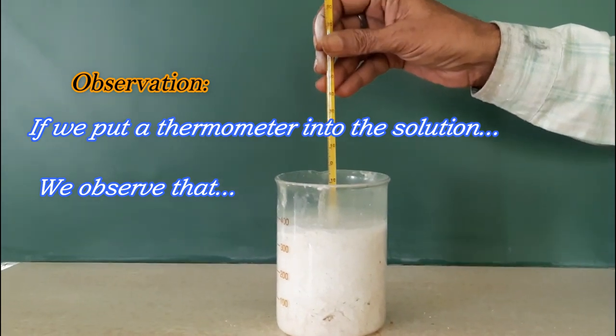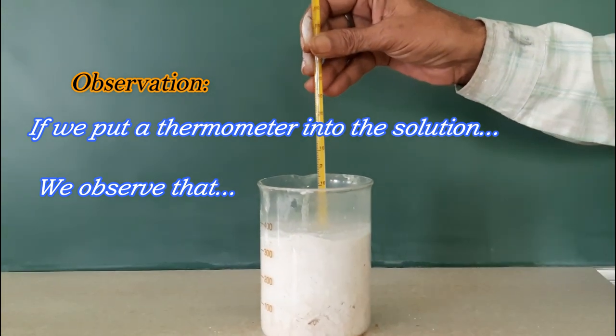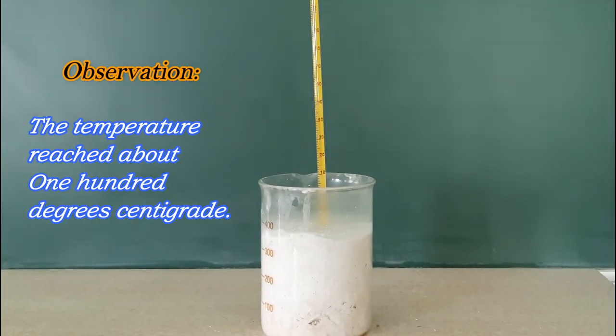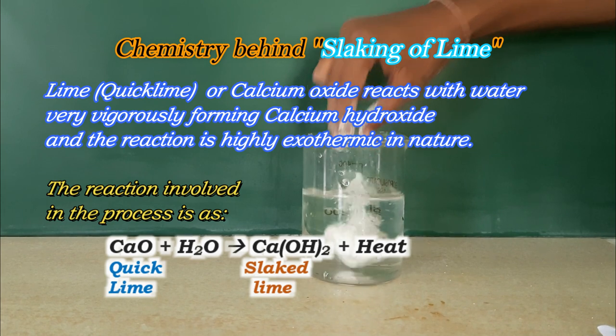If we put a thermometer into the solution, we observe that the temperature reached about 100 degrees centigrade. Chemistry behind slaking of lime.